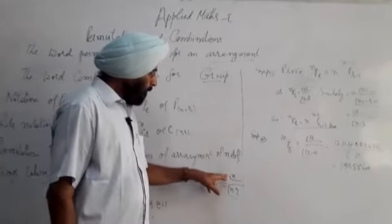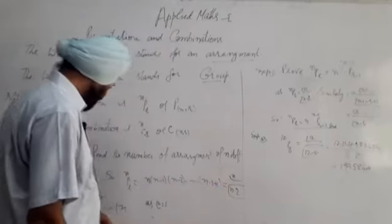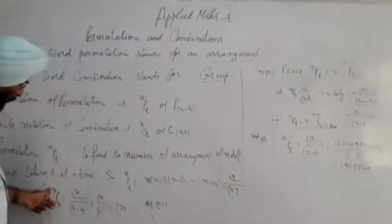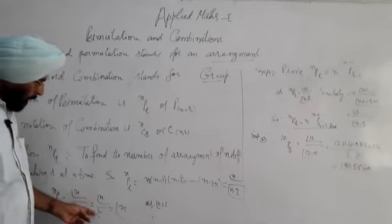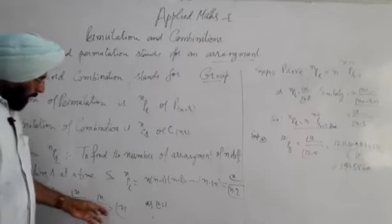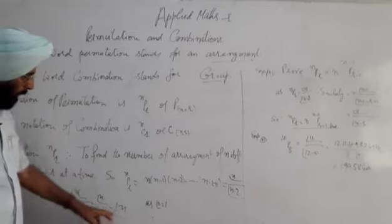We can also write this as n factorial over (n-r) factorial. If nPr, we have to find and take all n, then n factorial over (n-n) factorial equals n factorial over 0 factorial. And 0 factorial equals 1, so this equals n factorial.